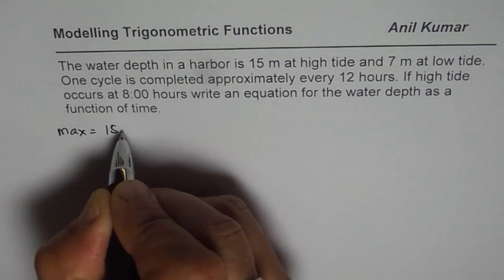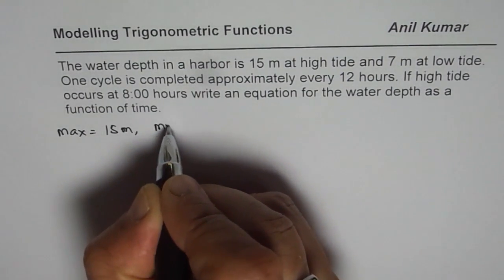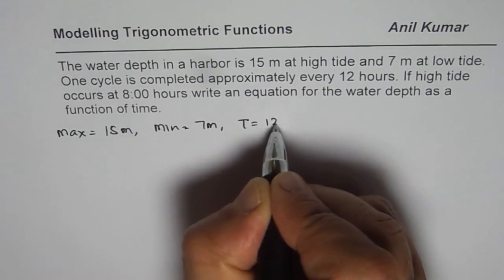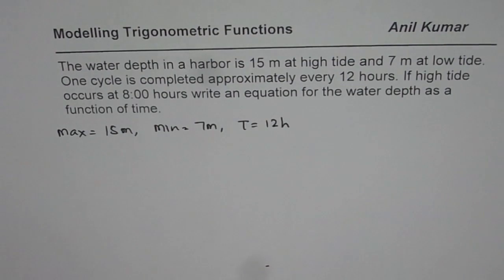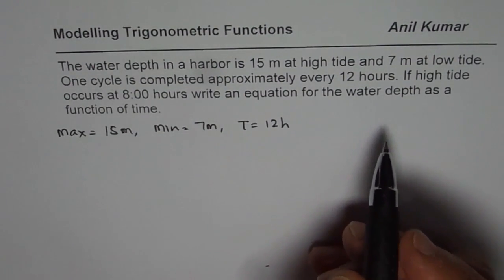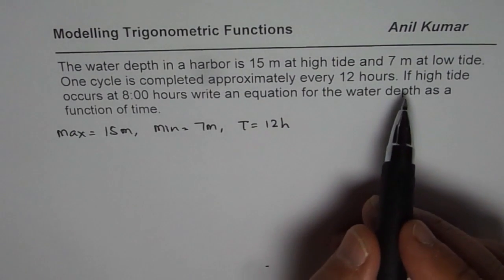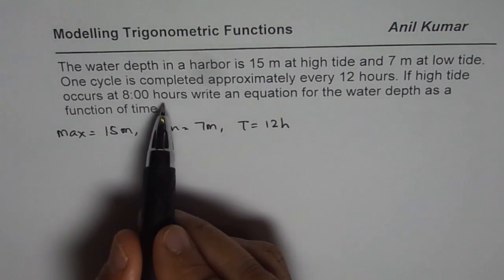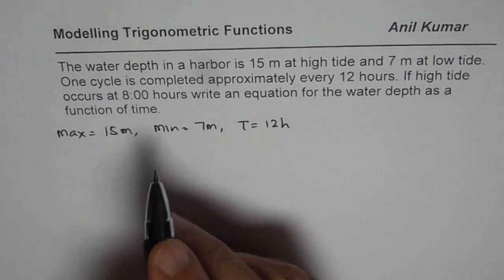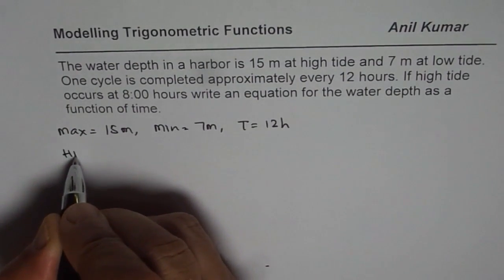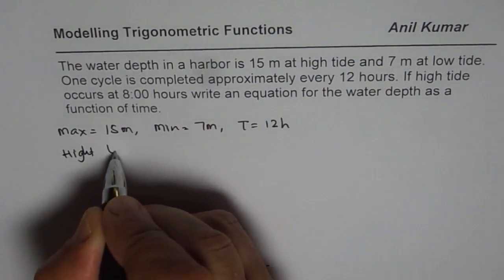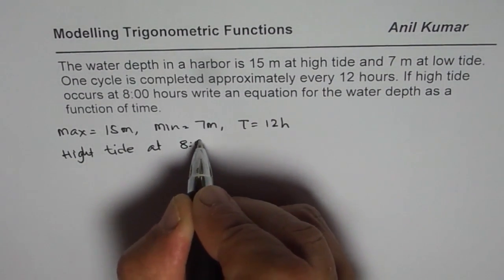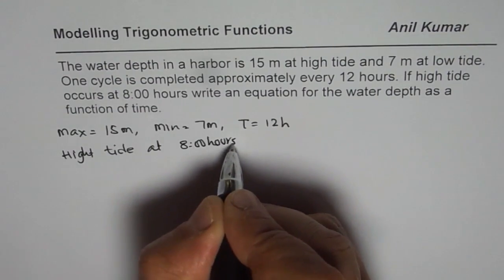One cycle is completed approximately every 12 hours. If high tide occurs at 8 hours, write the equation for the water depth as function of time. So what we are given here is that the maximum is 15 meters, minimum is 7 meters, and the time period is 12 hours. We need to write a sine or a cosine function. We are also given high tide occurs at 8, so maximum, that is high tide, is at 8 hours.